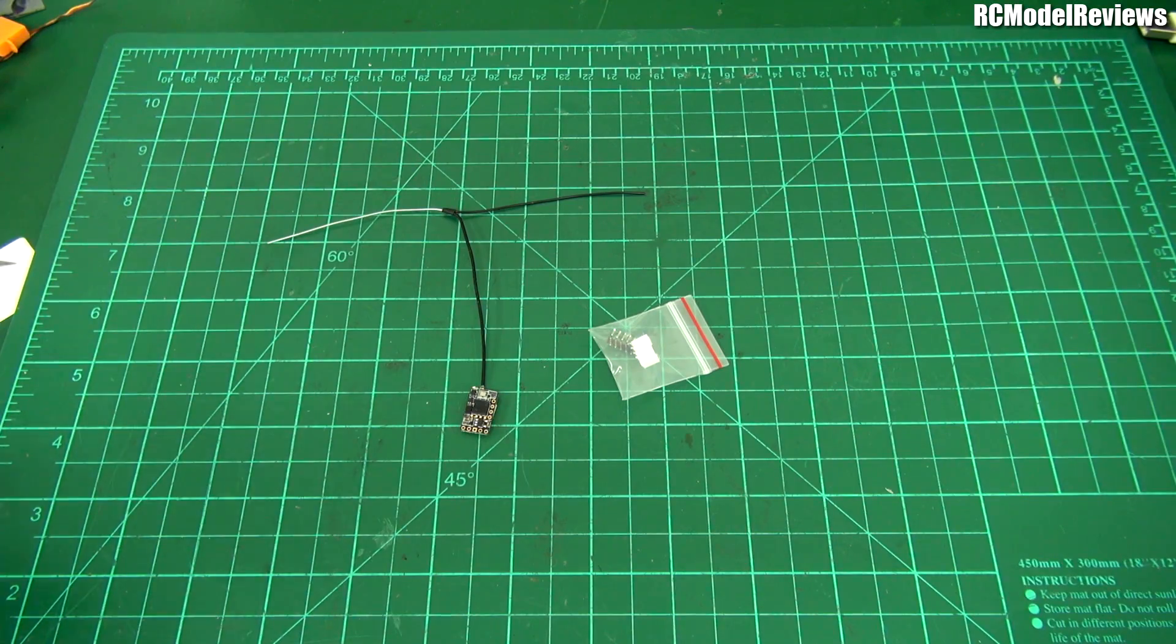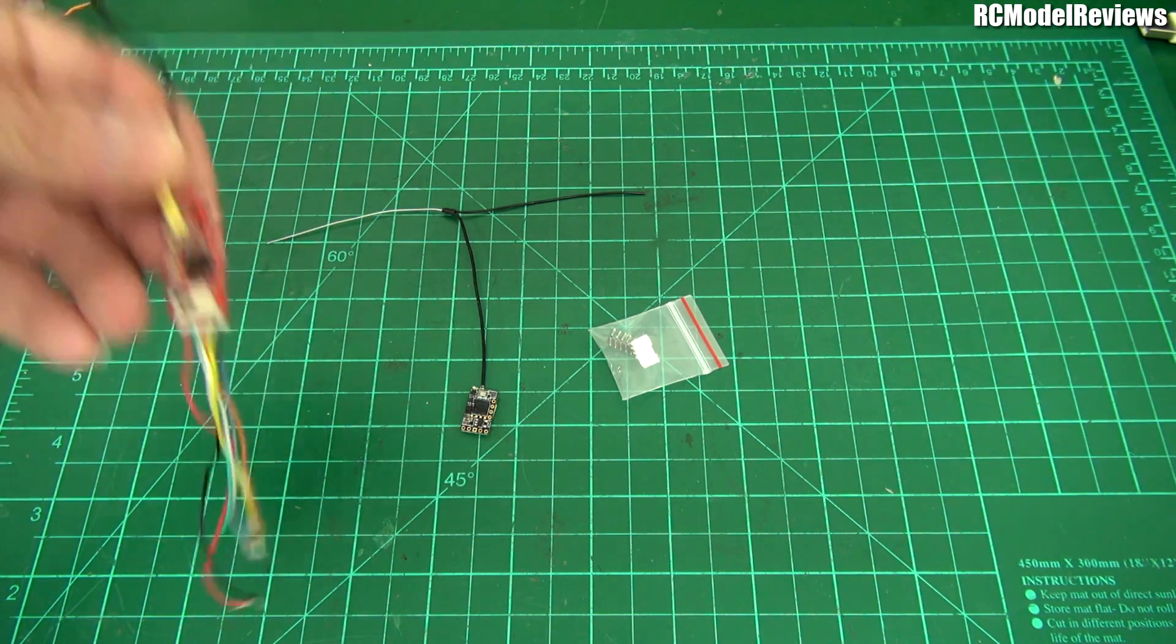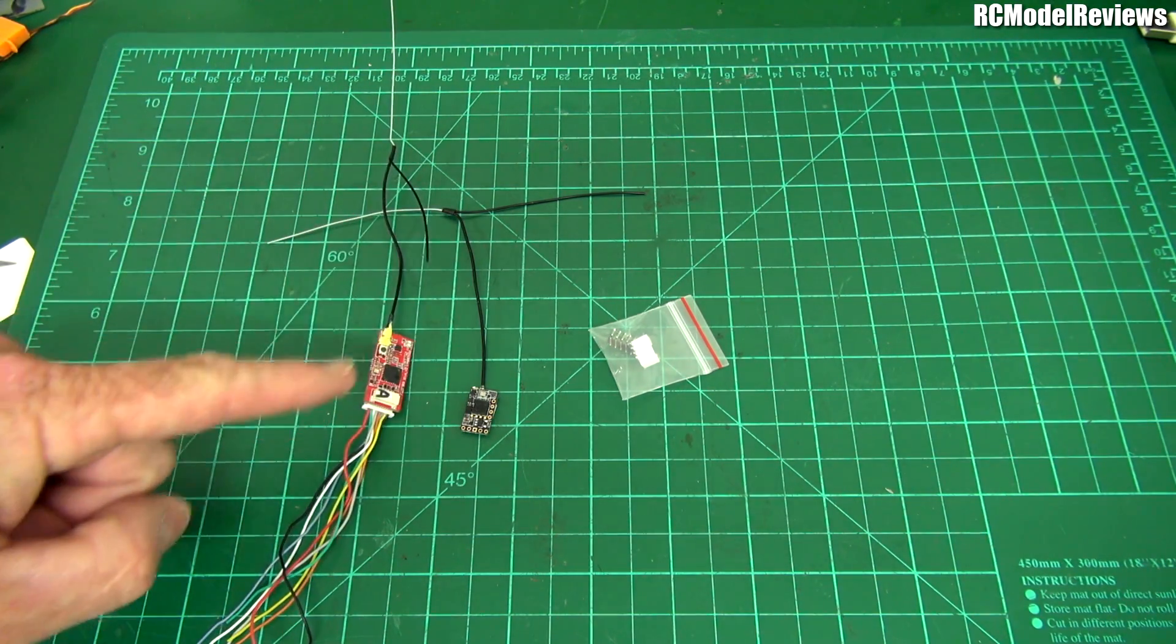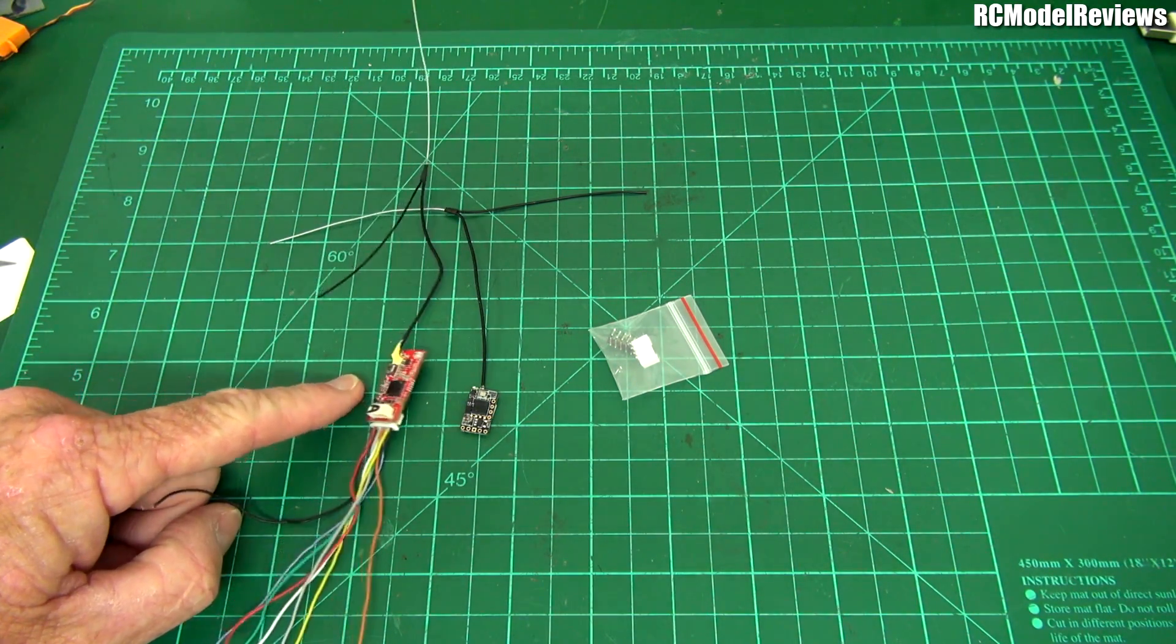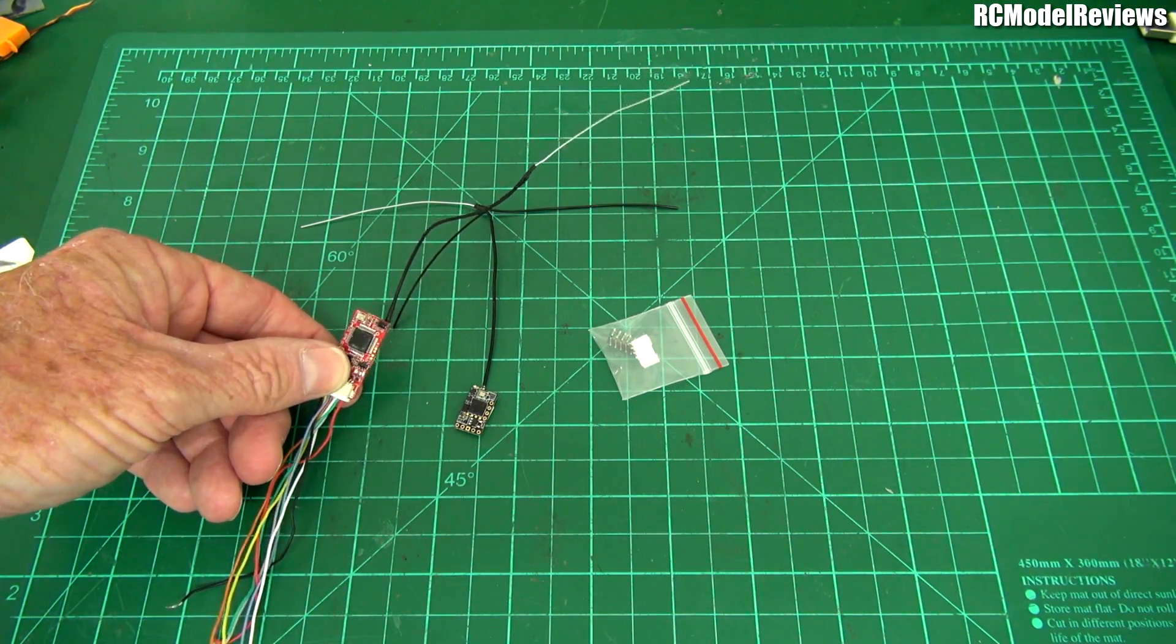To give you a comparison to the R9 slim, which was the other small one - there's the R9 slim. This one doesn't work, never worked out of the box. Broken. Bad form FreeSky.